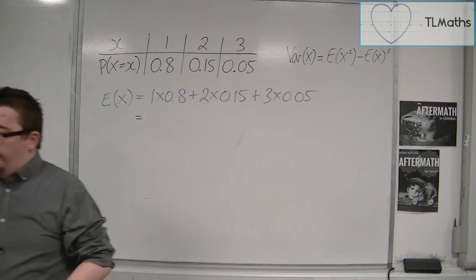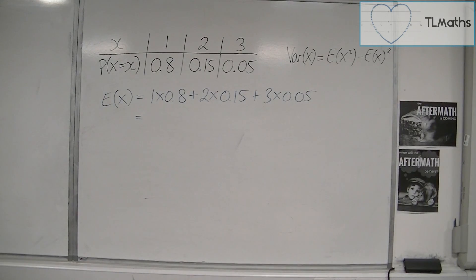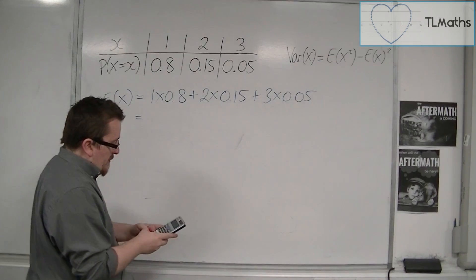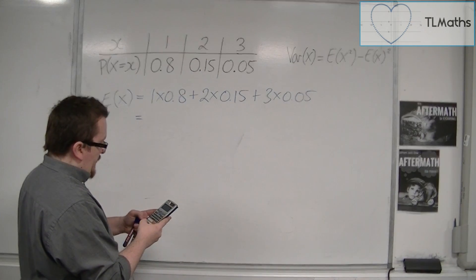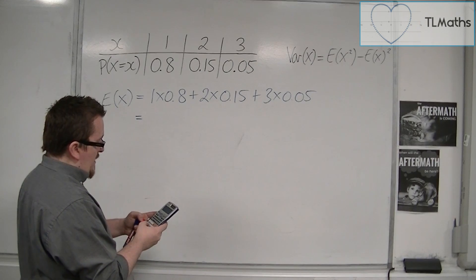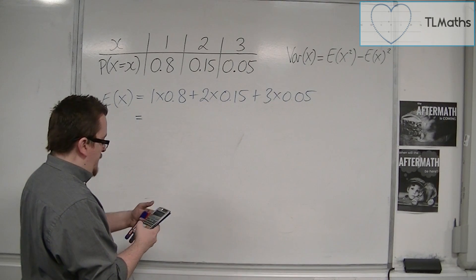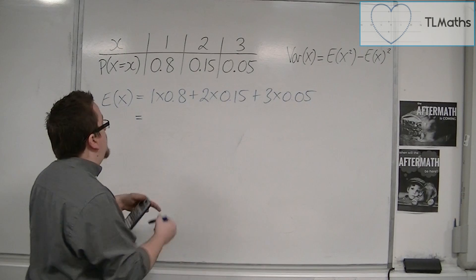We get our calculator. Let's work this out. We have 1 times 0.8 plus 2 lots of 0.15 plus 3 lots of 0.05. That is 1.25.